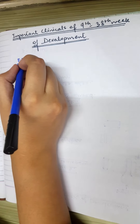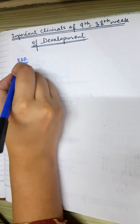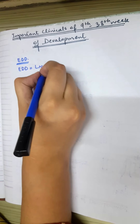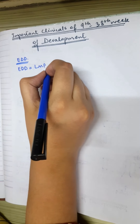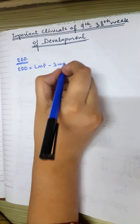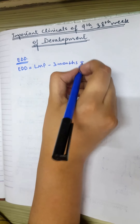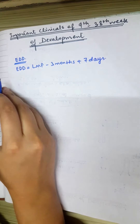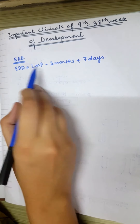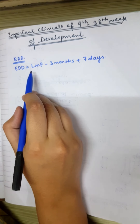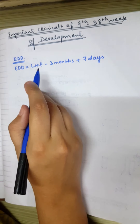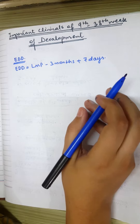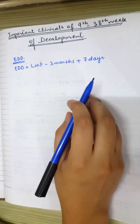The formula for EDD is: EDD equals LMP minus 3 months plus 7 days. LMP stands for Last Normal Menstrual Period. So we subtract 3 months and add 7 days to get the EDD.